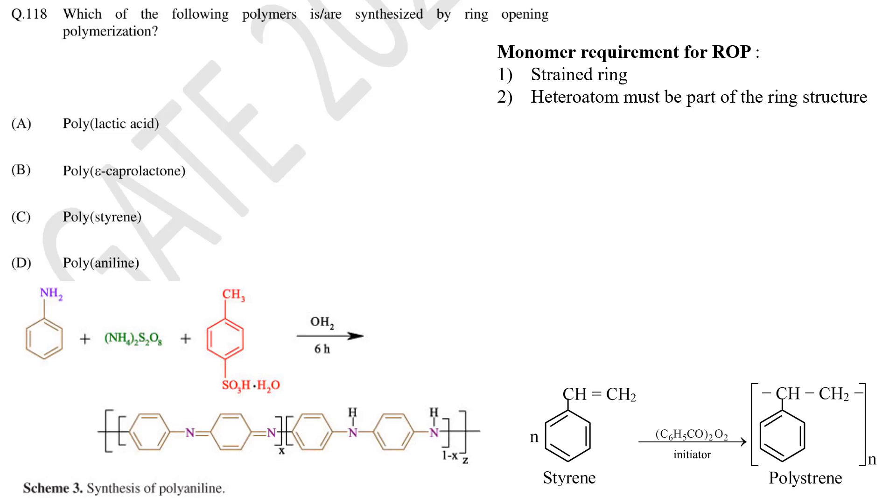Both aniline and styrene monomers neither have strained ring nor the heteroatom is part of the ring structure. So these two cannot be polymerized by ring opening polymerization. Only polylactic acid and polycaprolactone can be synthesized by ring opening polymerization as monomer of both the polymers fulfills requirement of ring opening polymerization. So the correct answer is A and B.